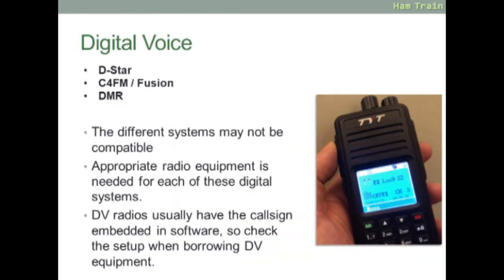A quick look at digital voice. In the UK, there are three main formats all competing with each other: D-star, C4FM also known as Fusion, and DMR. The systems generally aren't compatible with each other, and you need special radio equipment to work each digital mode. Pictured on screen is a TYT handheld used for DMR. DV radios usually have the call sign embedded, so if you're lending equipment, make sure they're not transmitting your call sign.